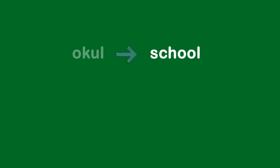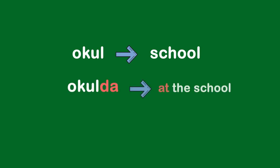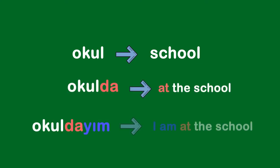Let's see some examples. 'Okul' means school. 'Okulda' means at the school. 'Okuldayım' means I am at the school. So in English, you say 'I am at the school' with five words, but in Turkish it's just one word — okuldayım.